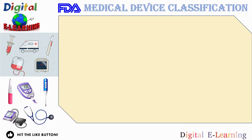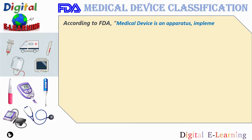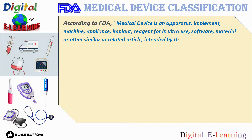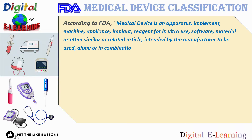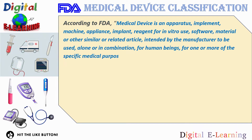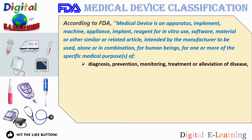Before we jump to medical device classification, let us understand the definition of a medical device as per the FDA. As per the FDA, a medical device is an apparatus, implemented machine, appliance, implant, reagent for in vitro use, software, material, or any other similar related article intended by the manufacturer to be used alone or in combination for human beings for one or more specified medical purposes. That includes diagnosis, prevention, monitoring, treatment, or alleviation of disease.